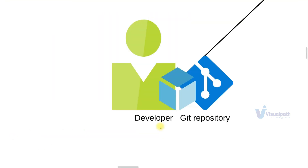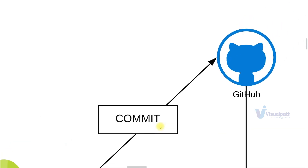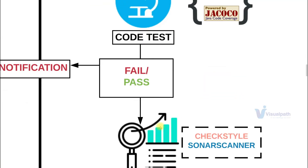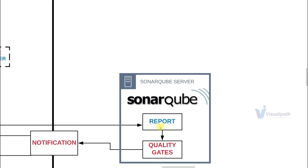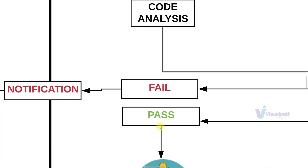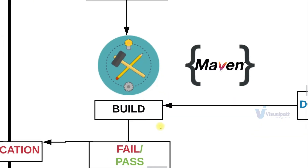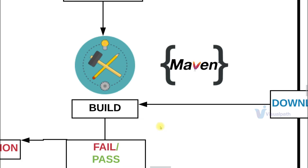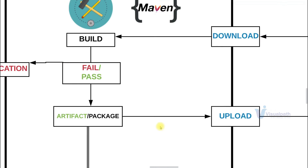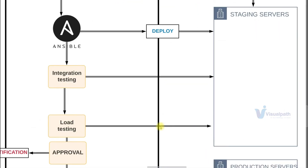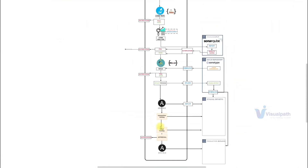If you've already done the continuous integration project and have the CI pipeline ready, you can jump to the second half of this project. In the first half we set up the continuous integration pipeline. If you already have that setup, you can directly jump to the second half and extend the pipeline into continuous delivery by integrating Ansible and the software test suite together.